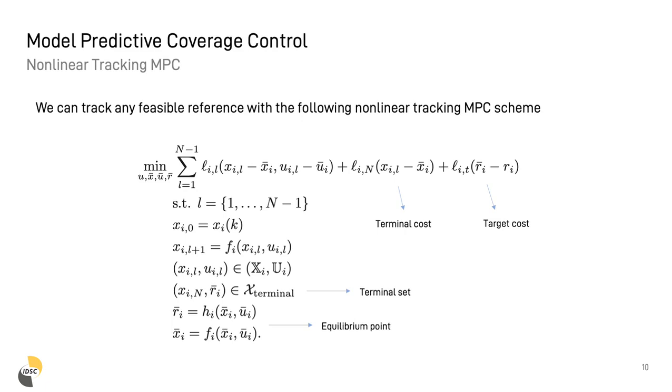A terminal invariance set and a terminal cost are added to ensure recursive feasibility and asymptotic stability. A possible way to compute these two terminal ingredients is described in the paper, and the main idea behind is to compute a terminal set and a terminal cost for a linearized version of the system, together with a shrinking factor that ensures that the computed set and cost are an invariant set and a Lyapunov function for the original system respectively.